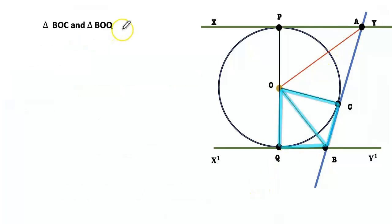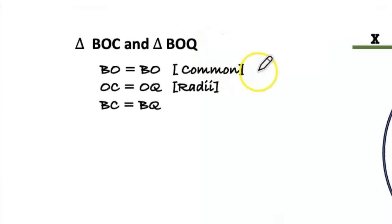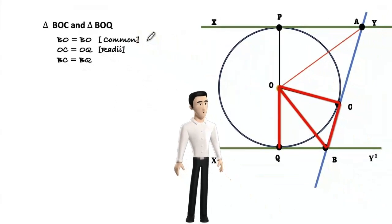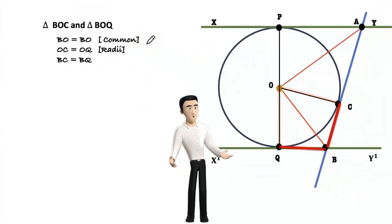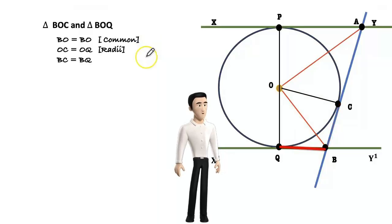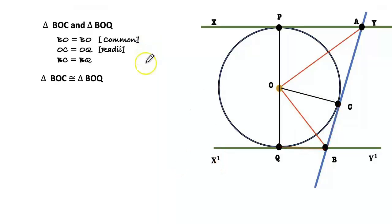Now we have to see triangle BOC and triangle BOQ. Here BO equals BO common, OC equals OQ radii, and BC equals BQ tangents. Therefore triangle BCO congruent triangle BOQ by SSS. Angle CBO and angle QBO are equal, corresponding parts of congruent triangles, equal to y.